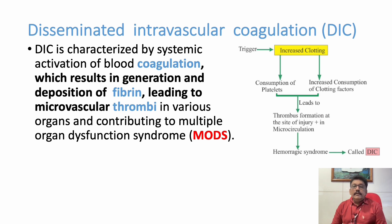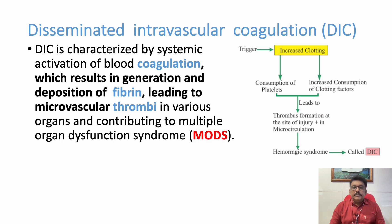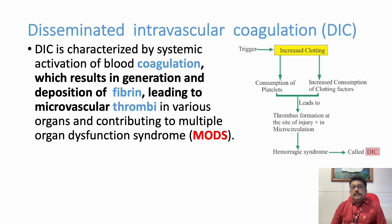The body then tries to lyse the clots formed due to the trigger. But since the trigger persists, clots form again, platelets are consumed, and coagulation factors are consumed repeatedly. Ultimately the body loses all its normal platelets and coagulation factors, and the patient develops bleeding. This is called DIC.